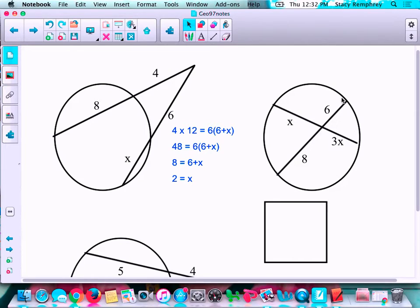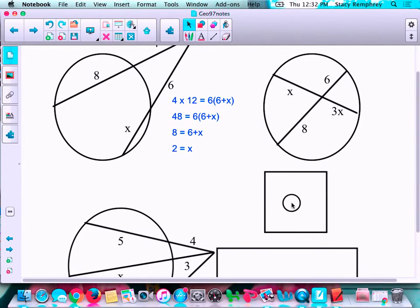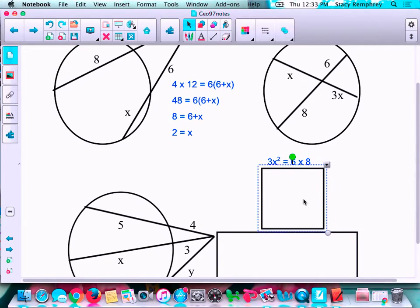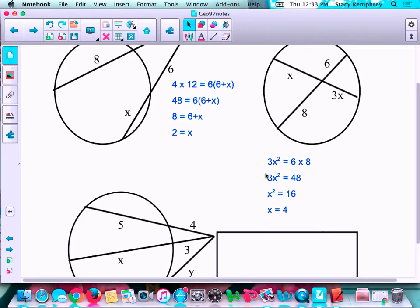And the next problem, there are two chords. So the product of the segments of one chord equals the product of the segments of the other chord. So I set it up, 3X times X is 3X squared, and 6 times 8. So those equal to each other. Divide both sides by 3. You get X squared equals 16. And then the square root gives you X equals 4. It actually gives you X equals 4 and negative 4, but we don't use the negative numbers in geometry.